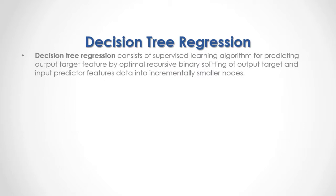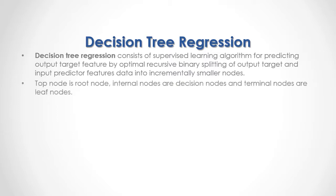Decision Tree Regression is a supervised learning algorithm for predicting an output target feature by optimal recursive binary splitting of output target and input predictor feature data into incrementally smaller nodes. The top node is the root node, internal nodes are decision nodes, and terminal nodes are leaf nodes.